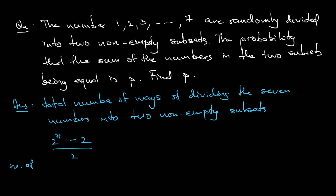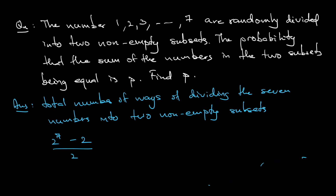Also, divide by 2 because the identity of the subsets doesn't matter. If I split into {1, 2} and {3, 4, 5, 6, 7}, it's the same as splitting into {3, 4, ..., 7} and {1, 2} — the identity of the subset doesn't matter. So 2 to the power of 7 is 128, minus 2 gives 126, divided by 2 is 63.